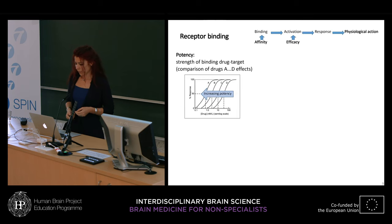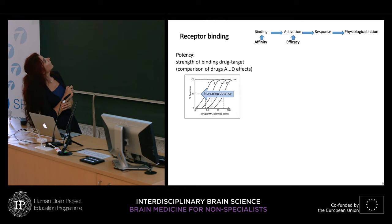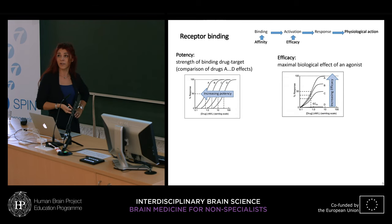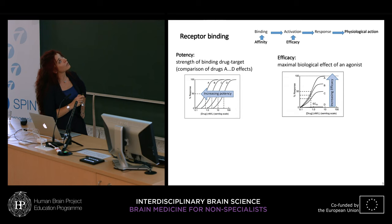Other important terms in receptor binding are potency and efficacy. Potency allows us to compare different drugs — for example, if drug A gives 50% of the response at a lower concentration than drug D, then drug A is more potent than drug D. Efficacy is the maximal biological effect that an agonist can produce; if all drugs have the same SC50 but reach different maximum activity levels, drug A with higher maximum activity has higher efficacy than drug D.